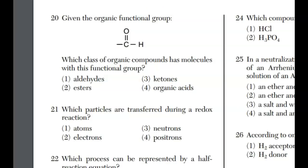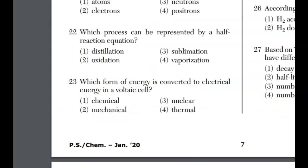Question 21, which particles are transferred during a redox reaction? Redox stands for reduction and oxidation. The loss of electrons is oxidation, the gain is reduction. Notice I used the word electrons. It's a fact you need to know. Question 22, half reactions are your oxidation or reduction equations. Question 23, which form of energy is converted to electrical energy in a voltaic cell? Voltaic cells use redox reactions to produce electrical energy from chemical energy, which is choice one.